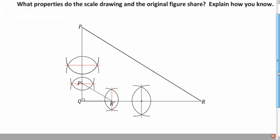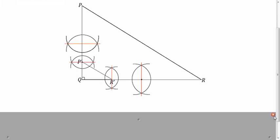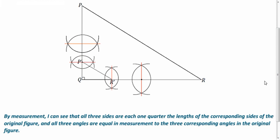What properties do we have? We know that those sides are in proportion. So QR prime is one quarter of QR. And QP prime is one quarter of QP. And all the corresponding angles are congruent. So angle P prime R prime Q is congruent to angle PRQ. And angle QP prime R prime is congruent to angle QPR.